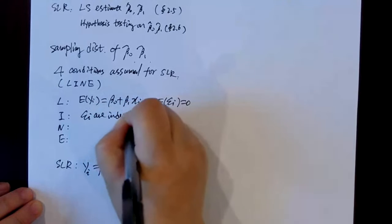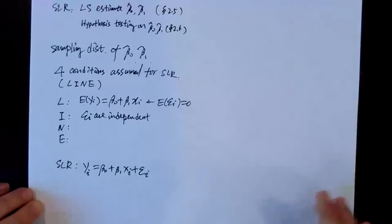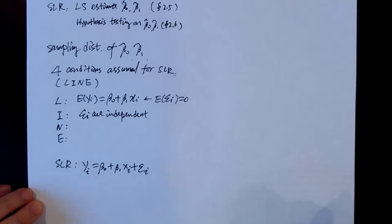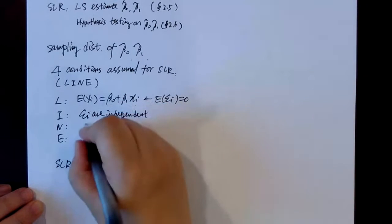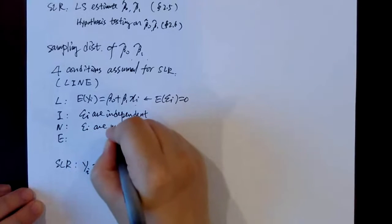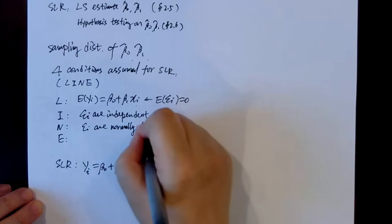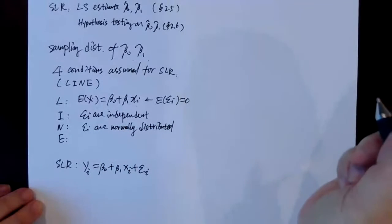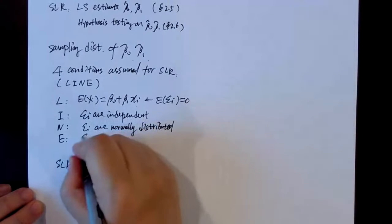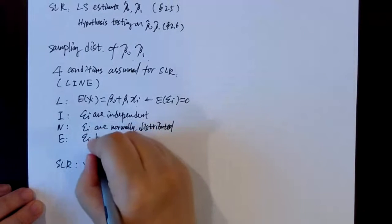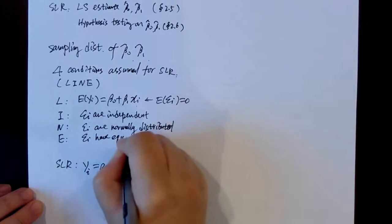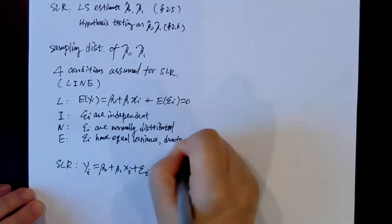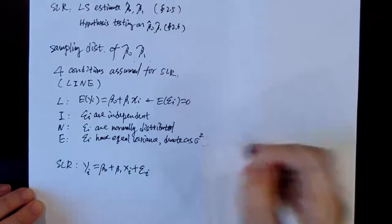The I condition states that the epsilon-i's are independent of each other — epsilon-i and epsilon-j, across different indices, are independent. The N condition says the epsilon-i's are normally distributed. The E condition says the epsilon-i's have equal variance, denoted sigma-squared.